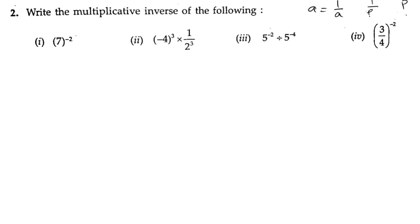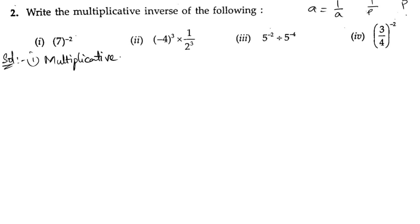That means whatever number is present in the numerator goes to the denominator, and the number which is in the denominator comes upside. Now let us start the first bit. In the first bit, we are having 7 to the power of minus 2. Let us write down the multiplicative inverse of 7 to the power of minus 2.